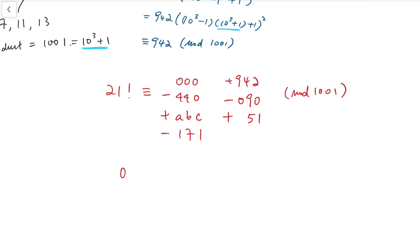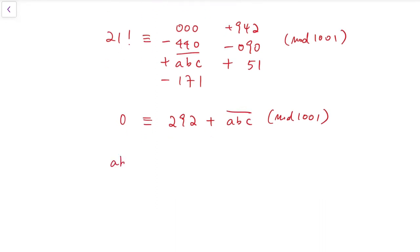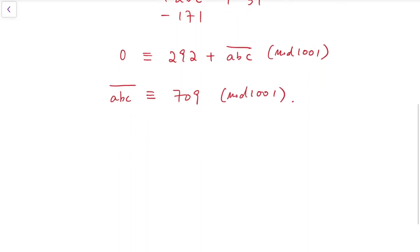whereas for the right, if we do some arithmetic on the known digits, then we have 440, 171, and 90, that is minus 701. And for the plus, we have 993. So that means we have 292 plus the 3-digit number abc mod 1001. So that 3-digit number abc should be congruent to 709 mod 1001.